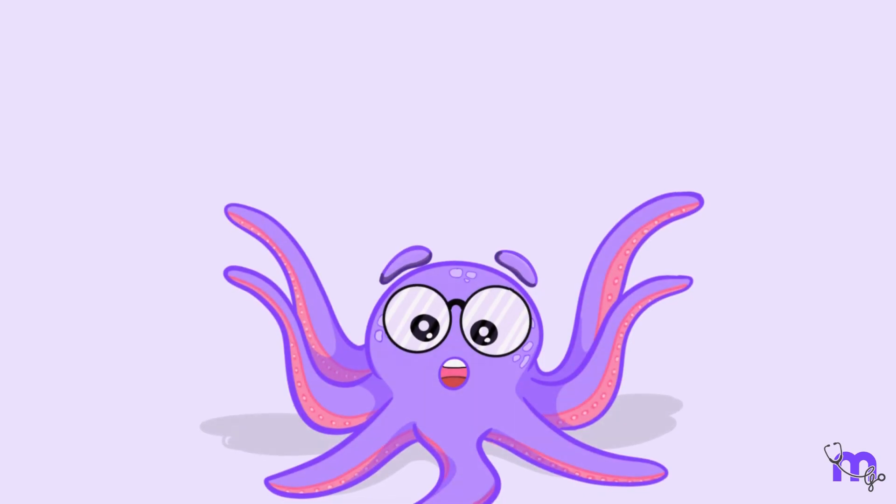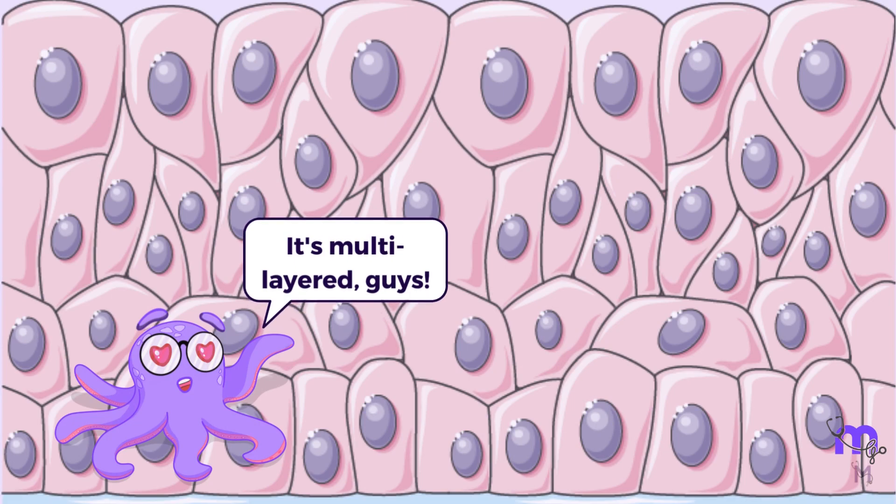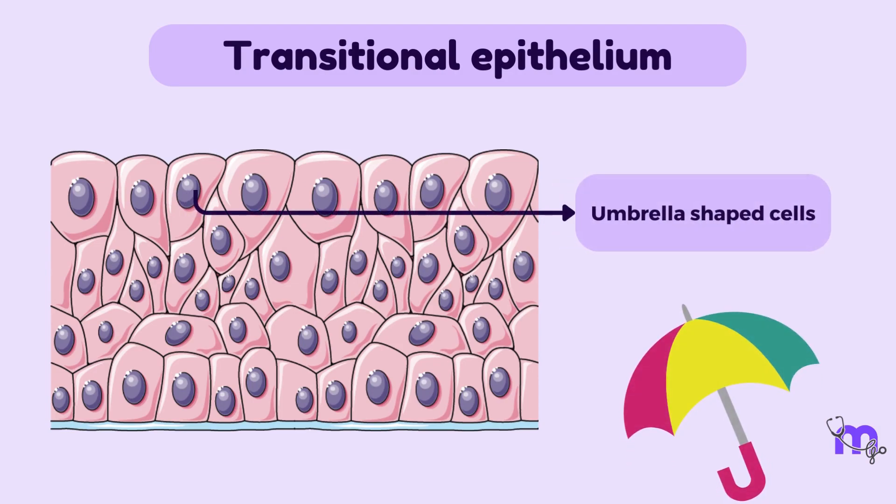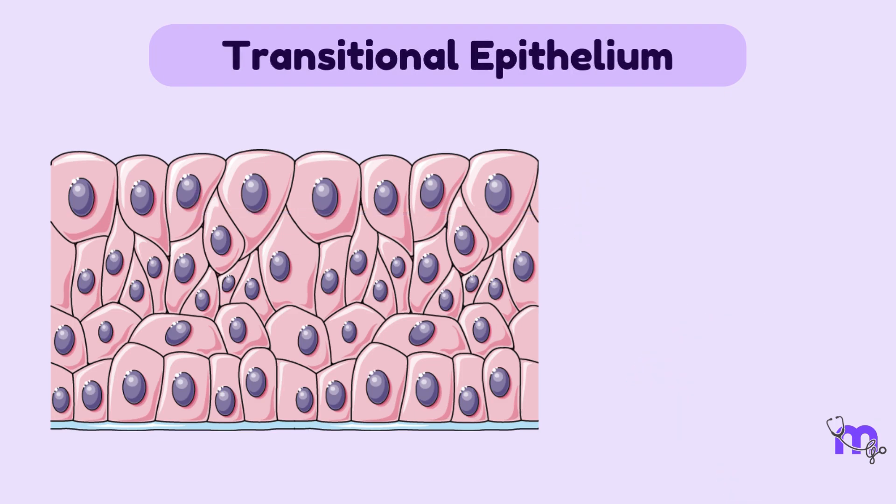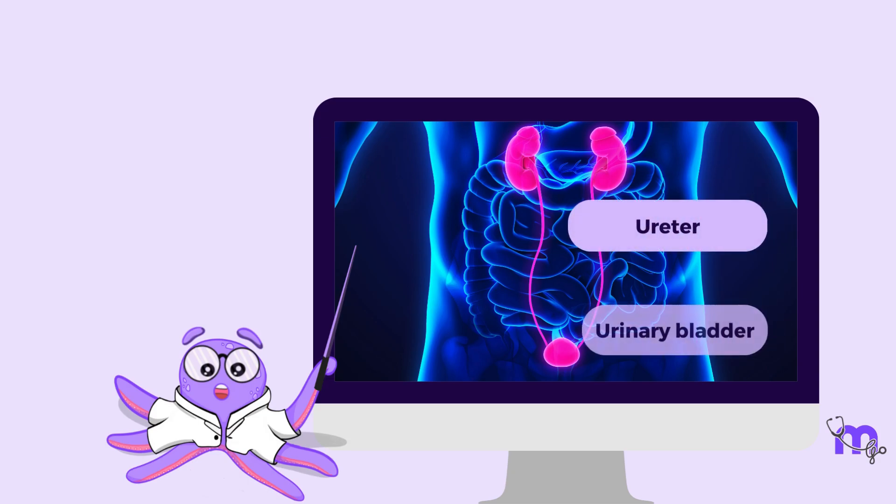There is another special epithelium called the transitional epithelium that is multi-layered like the stratified squamous epithelium but differs from it because the uppermost layer is made of umbrella-shaped cells and not squamous cells. The cells on the basement membrane are columnar but the cells in between are pear-shaped or polyhedral. This epithelium is mostly found in the excretory system i.e. the ureter, urinary bladder, urethra and some parts of the kidney which is why it gets the name urothelium.